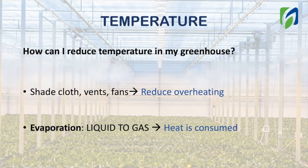If you are looking to reduce temperature in comparison to the outside, a cooling system will be required. A cooling system includes evaporation of water, which consumes heat. So in order to reduce temperature in comparison to the outside in a greenhouse, we need evaporation.